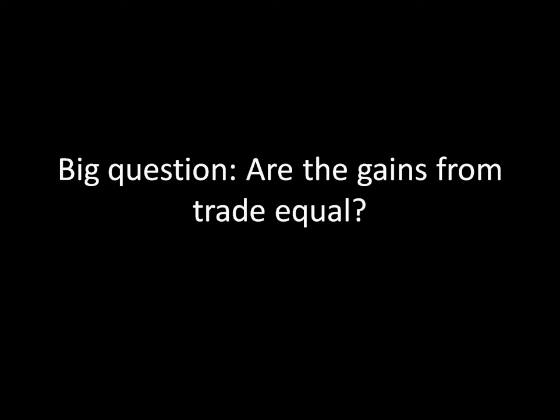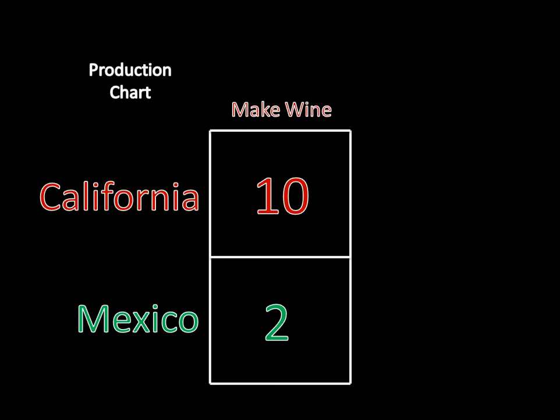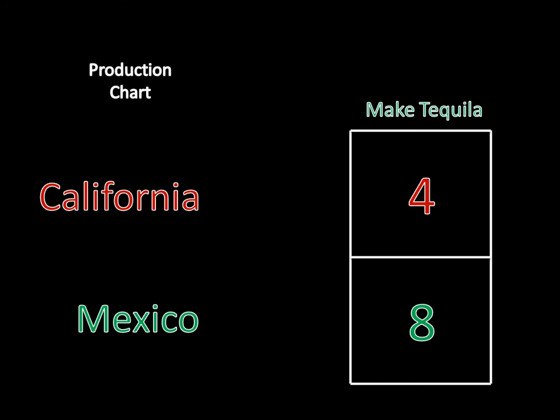To see how this works, we're going to look at a production chart — the same one from the video on absolute advantage. California and Mexico can produce two goods: either wine or tequila. For California, a day's worth of labor can produce 10 bottles of wine. For Mexico, they can produce two bottles of wine. On the other side, if California were to spend a full day's worth of labor, they can produce four bottles of tequila, whereas Mexico can produce eight bottles of tequila.